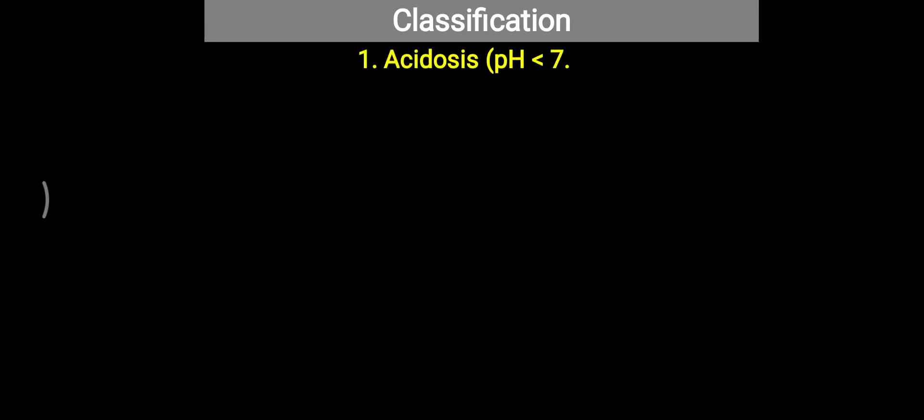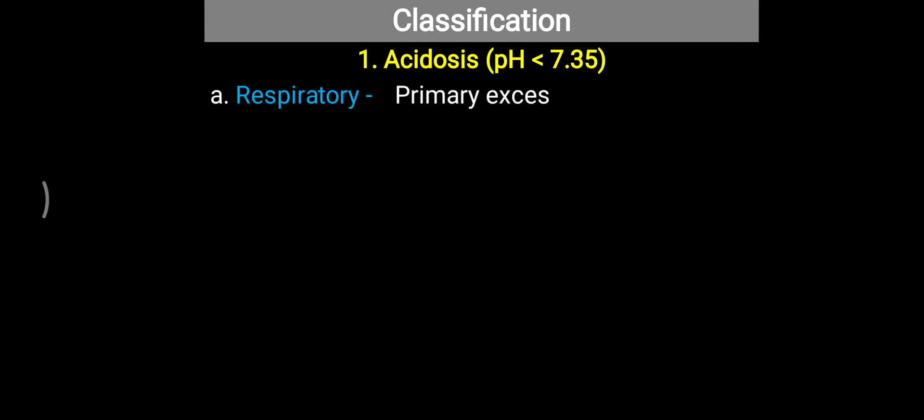If pH is less than 7.35, then it is called acidosis, because of the high hydrogen ion concentration. This acidosis is again subdivided into two categories.